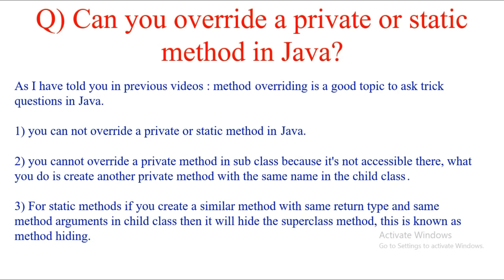For static methods: if you create a static method with the same return type, name, and arguments in the child class, it will hide the superclass method — this is known as method hiding. So when you try to do overriding or dynamic polymorphism with a static method, you are actually doing method hiding, not overriding. One important thing: you should always call a static method with the class name, but you can also call it using an object reference without getting an error — though you should not do so.